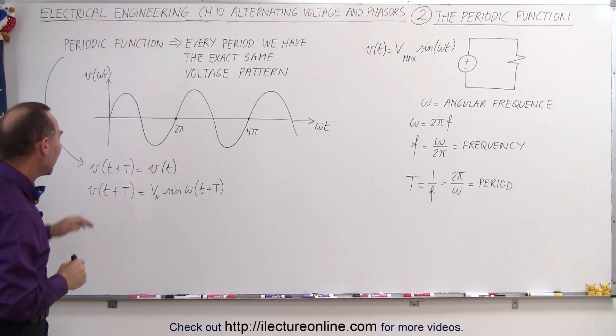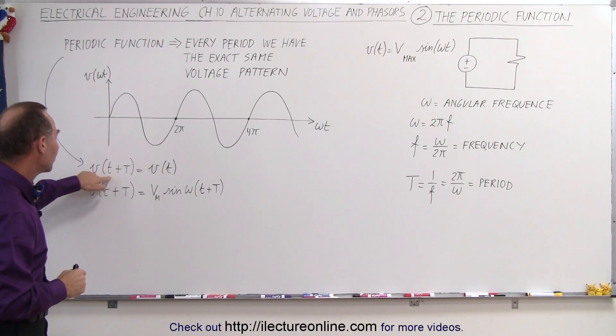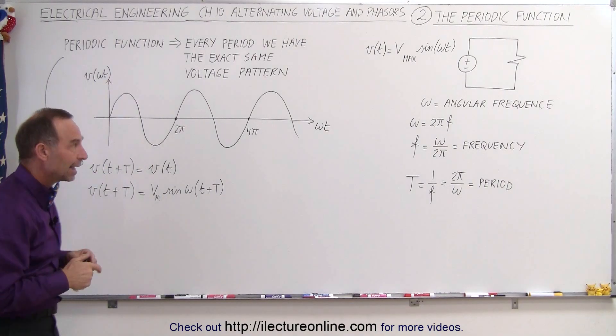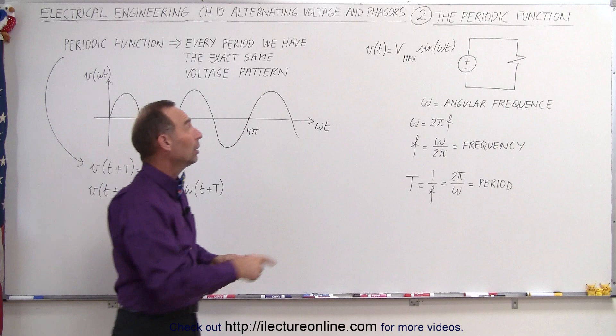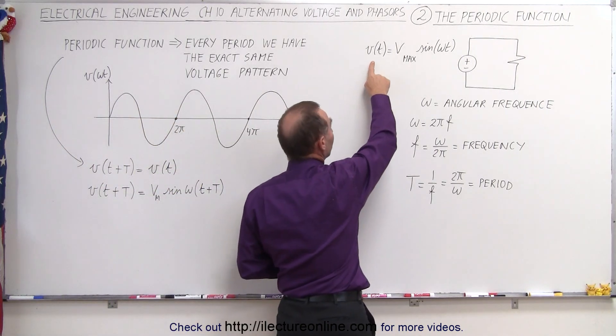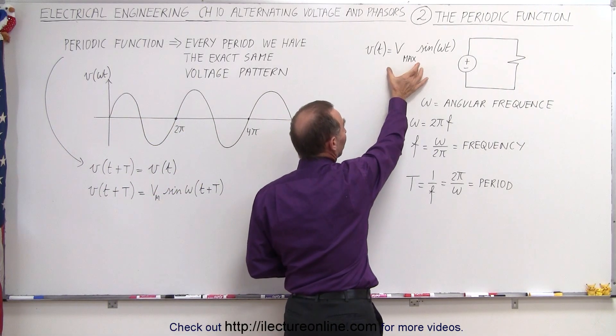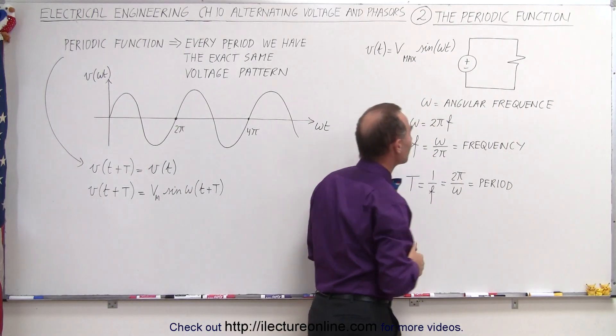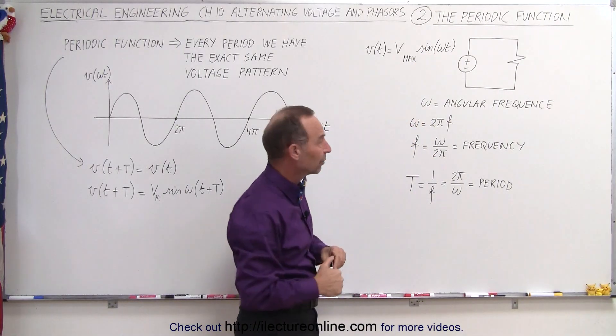And now we're going to show you that when we increase the time by a period, then we should get the same function back again. So going back again, we have that the voltage as a function of time is equal to the maximum voltage of the oscillation times the sine or the cosine of ωt, ω being the angular frequency.